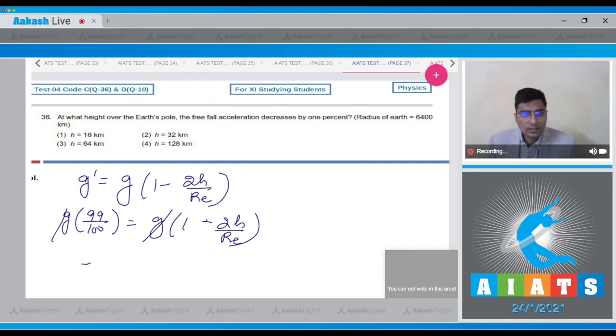g and g will get cancelled and solving, h turns out to be equal to Re by 200, that is 6400 by 200 which will be 32 kilometers. For this question, the correct answer is option 2.